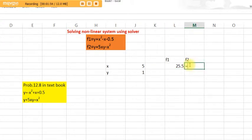And then f2, which is y plus 5 times x times y minus x squared. f1 is 25.5, f2 is 1.